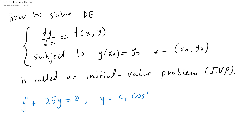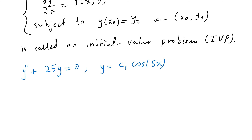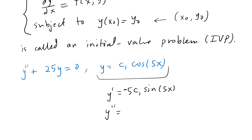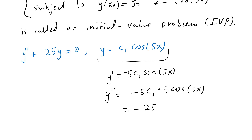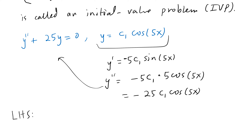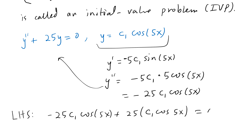Consider y = c₁cos(5x). To verify it's a solution, we find y' = -5c₁sin(5x) and y'' = -25c₁cos(5x). Substituting into the left-hand side gives -25c₁cos(5x) + 25c₁cos(5x) = 0, which equals the right-hand side. So y = c₁cos(5x) is a solution. Notice the solution is not just a point — it's a curve, specifically a cosine curve.